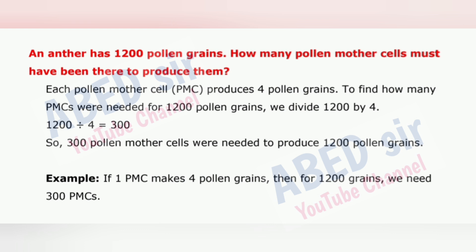So, 300 pollen mother cells were needed to produce 1200 pollen grains. For example, if 1 PMC makes 4 pollen grains, then for 1200 grains we need 300 PMCs.